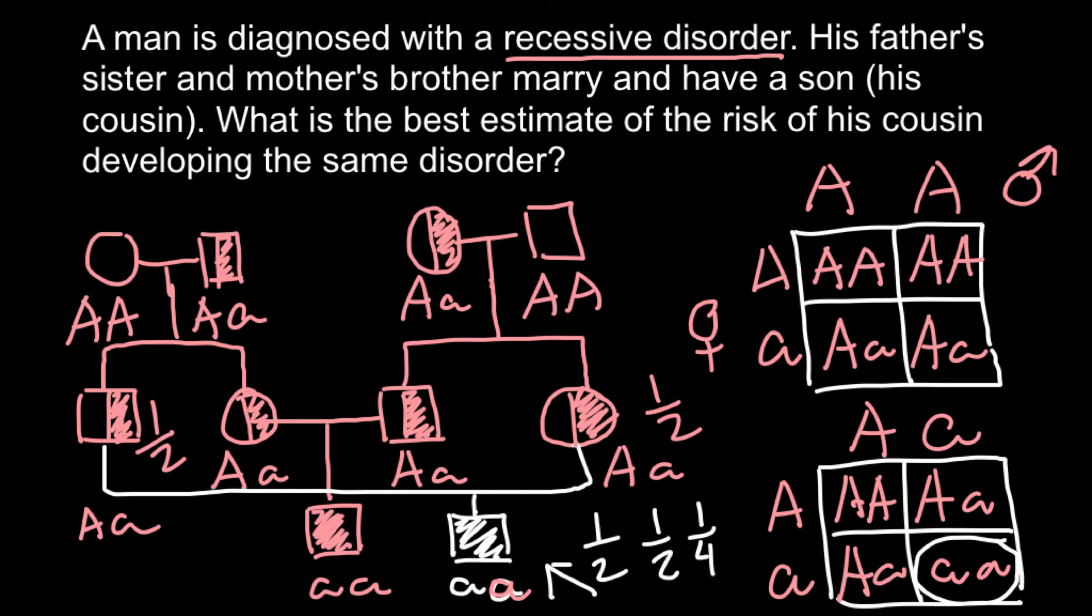We have three independent probabilities here, so we have to use the product rule. If we multiply one half by one half, we're going to get one fourth, and multiply it by one fourth, we're going to get an answer, one over 16. This is going to be our answer today. Our proband would have probability to be affected, and probability would be one over sixteenth.